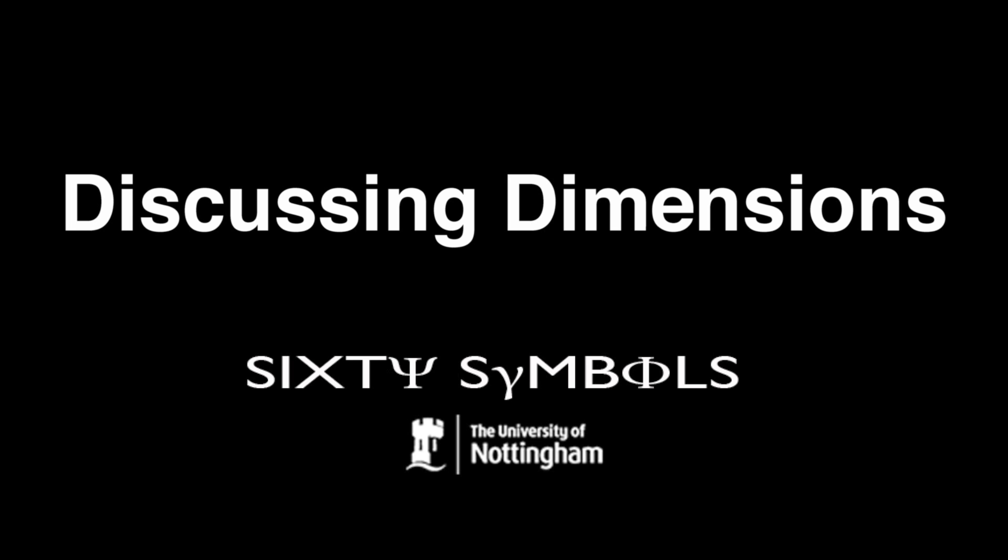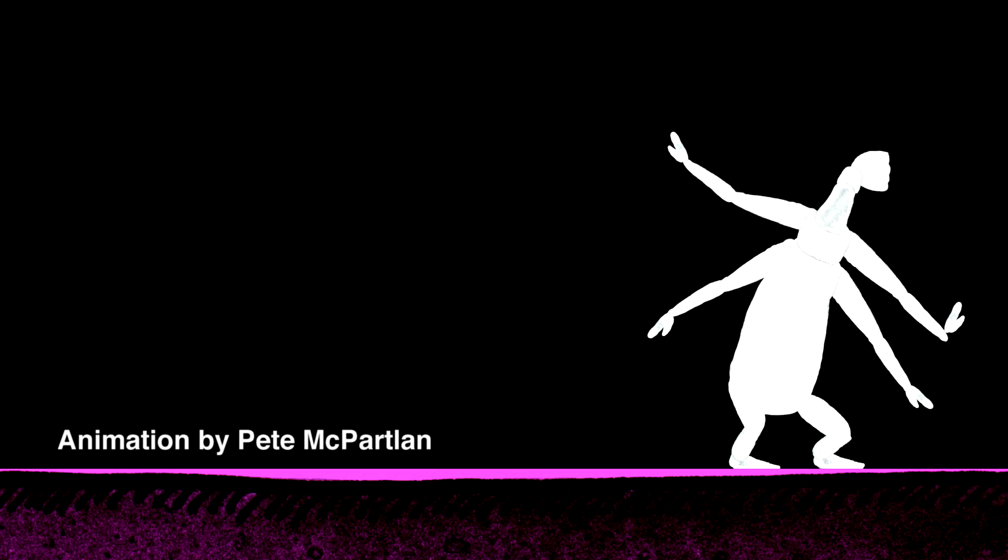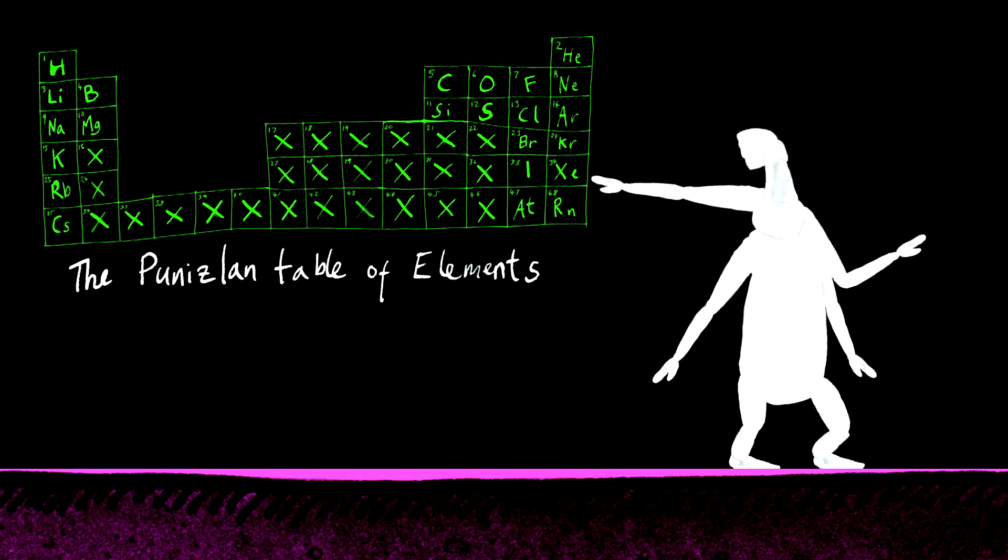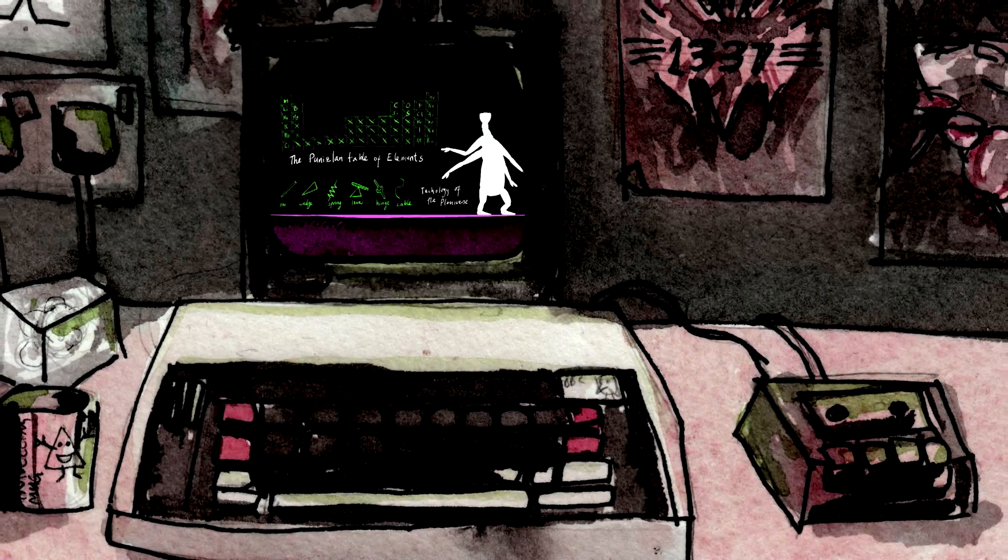Alexander Dewdney wrote a book called The Planiverse, in which it's a story about some people who accidentally start communicating with the two-dimensional universe, and so he explores the communication between universes. But there's a load of technical appendices at the end of the book about what the science behind it was, and I read it in the mid-1980s, just after it had come out.